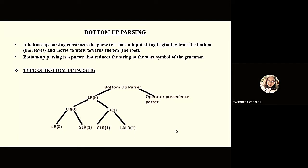What is bottom-up parsing? Bottom-up parsing constructs the parse tree for an input string beginning from the bottom and moves towards the top. Bottom-up parsing is a parser that reduces the string to the start symbol of the grammar. There are two types: the operator precedence parser, and LR — a type of bottom-up parser that analyzes deterministic context languages in linear time.